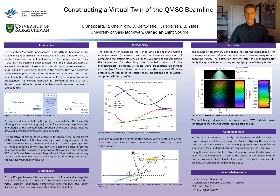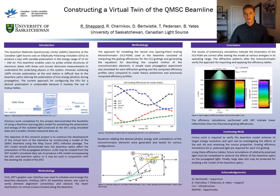My research project, constructing a virtual twin of the QMSC beamline, has been an incredibly rewarding experience and I'm excited to share it with you. The QMSC beamline at the CLS produces soft x-rays with variable polarization to probe the structures of materials, and in doing so they require 100% circularly polarized light at the end station. However, this is difficult to achieve because the beamline optics slightly alter the polarization of the low energy photons as they propagate, and the current approach for fixing this problem is outdated and inefficient.